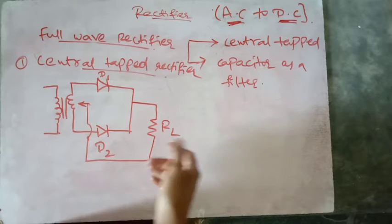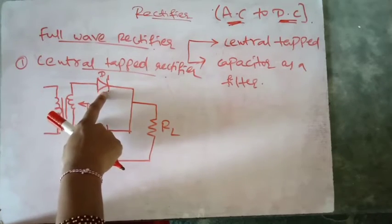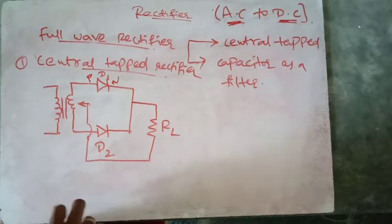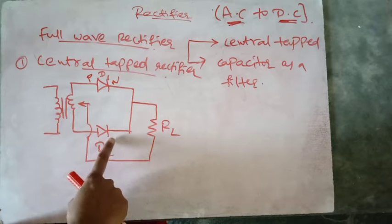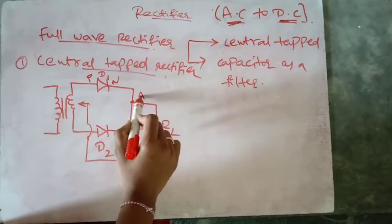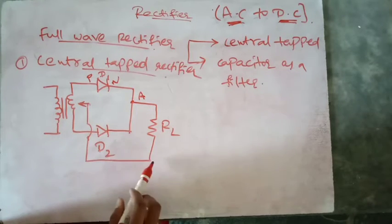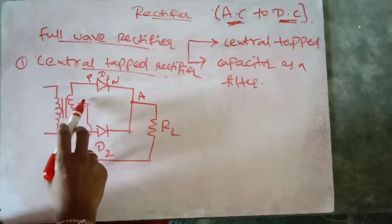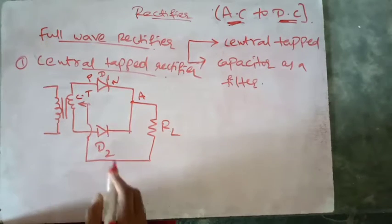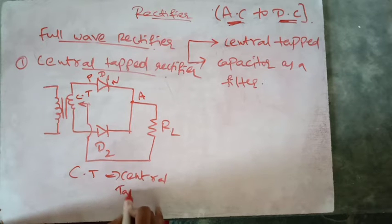I will explain this diagram one more time. I have taken a transformer and connected diode D1 and diode D2 — both PN junction diodes — to this transformer. At point A, I connected a load resistor RL, and tapped the other end to the CT point, where CT stands for central tapped. The secondary terminals are labeled S1 and S2.